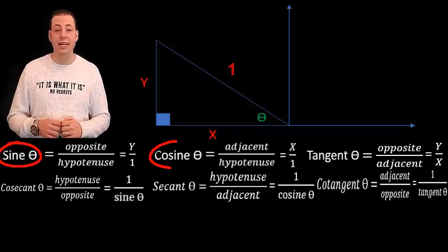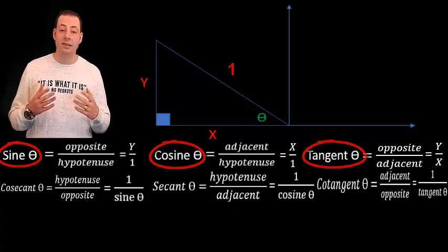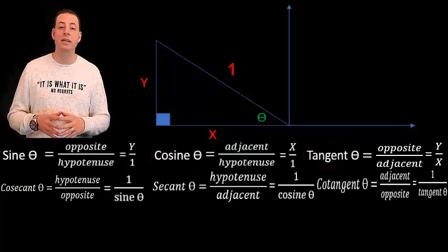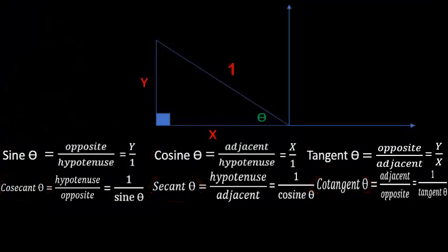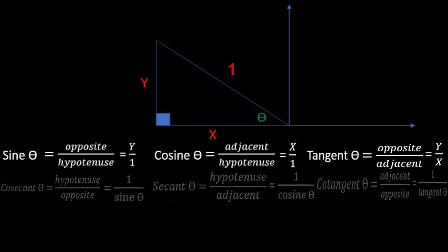So we have sine, cosine, and tangent. And their reciprocals respectively cosecant, secant, and cotangent. We can abbreviate that by saying SOH-CAH-TOA. It represents the first letter of each function with the first letter of the sides that belong to that function.